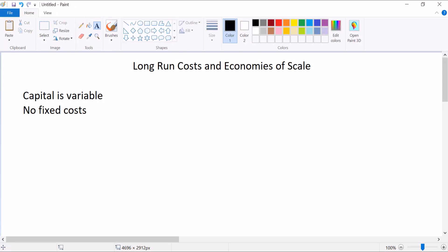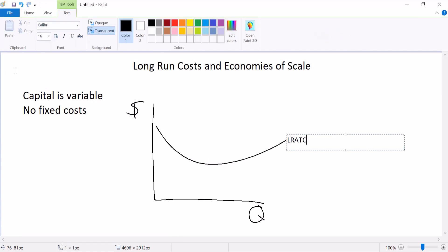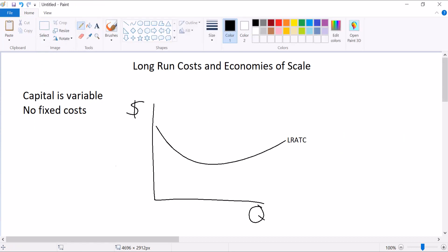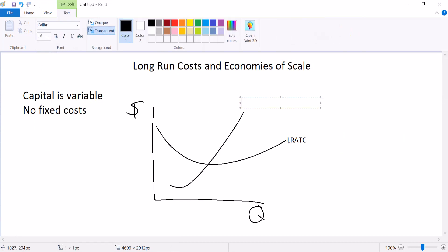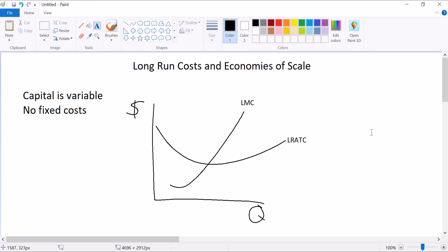And our graph for long run costs looks a lot like the other one. We have quantity here. We have costs on this axis. We've got this long run average total cost curve, and we also have a long run marginal cost curve. We could do the others too, but because there's no fixed cost, that wouldn't exist. And that means that the variable cost would be the average total cost curve. So this graph actually looks simpler.